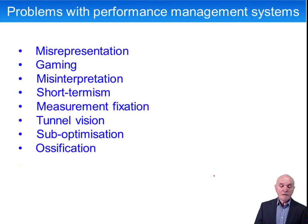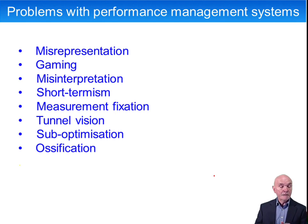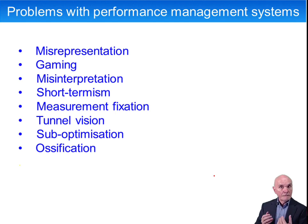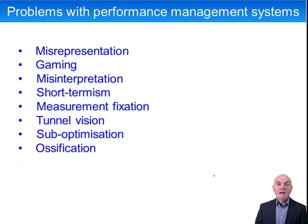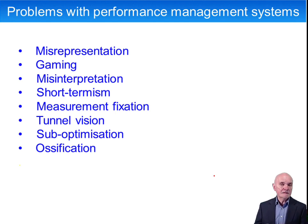Certain problems can arise with performance management systems. Misrepresentation is where people fiddle or lie — for example, including sales in a period where they shouldn't be included, to get their bonus up. Gaming occurs when, say, two divisions are competing for a bonus, and one division destroys the chances of the other by not passing on information or stealing their customers. Some sort of unfairness is implied by gaming.